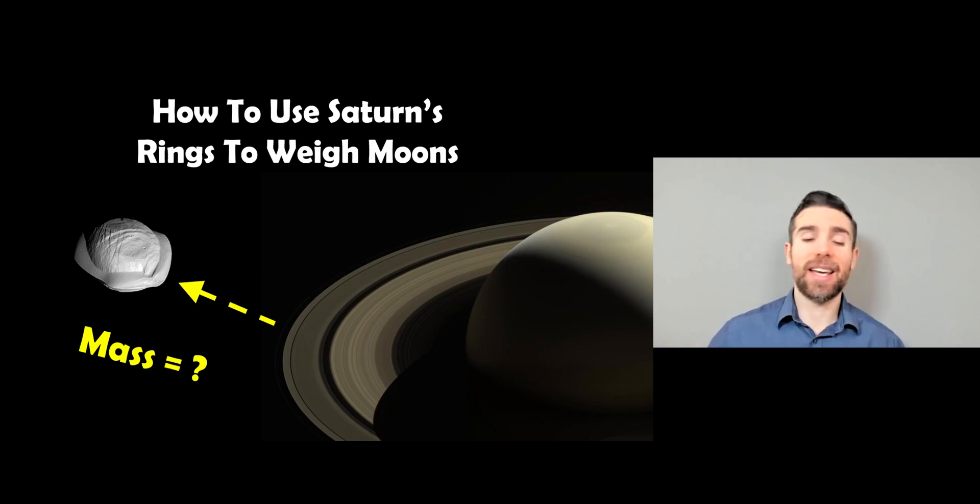And one of them, for Saturn at least, is to use its rings to find out the mass of the moon itself.